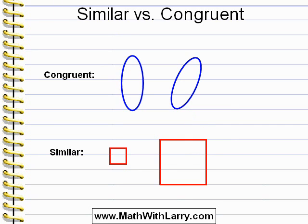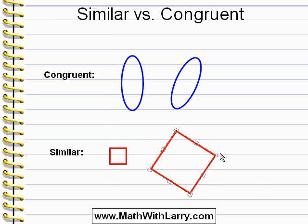And again, rotating doesn't matter, so even if I rotate this square, the shapes are still considered similar. They're both squares — the exact same shape — but they're different sizes.